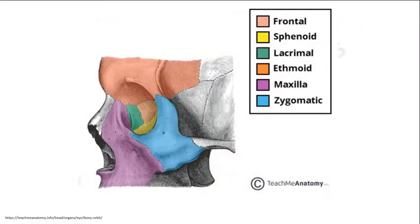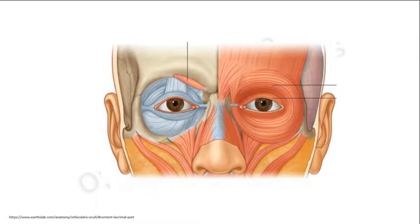Before discussing the steps of DCR, the lacrimal sac is situated in the lacrimal fossa, which is bounded anteriorly by the anterior lacrimal crest of the frontal process of the maxilla and the posterior lacrimal crest of the lacrimal bone. The floor of the lacrimal fossa separates the lacrimal sac from the nasal mucosa.